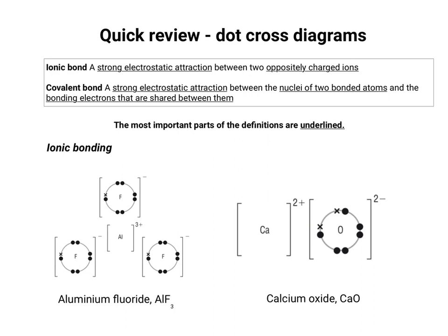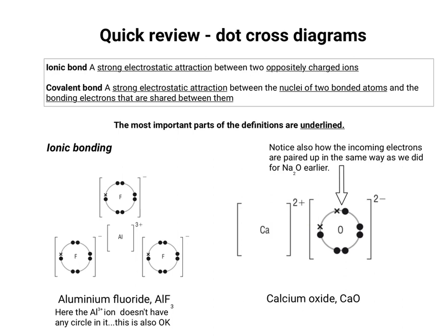Here we've got two typical examples. On the left-hand side, aluminium fluoride — you can see how the fluoride ions have been arranged around the aluminium so that attraction is shown between them; the negatively charged anions butt up towards the positively charged cation. Note that the aluminium fluoride has an Al3+ ion with no circle within it — this is also OK. What you mustn't do is put the next shell down, which would contain eight electrons. The incoming electrons gained by the oxygen are paired up in the same way as in sodium oxide.